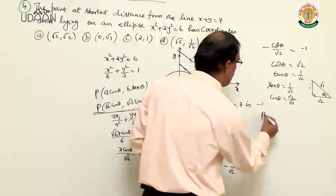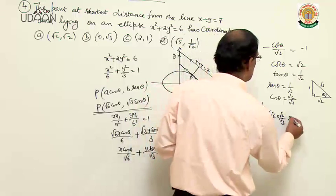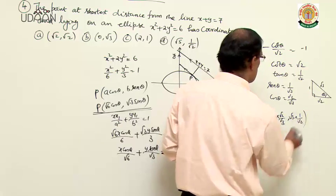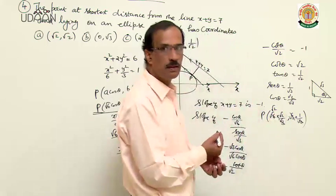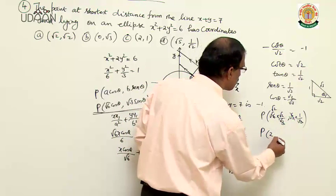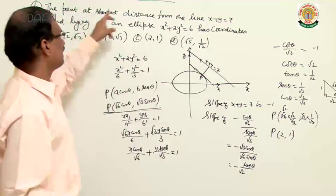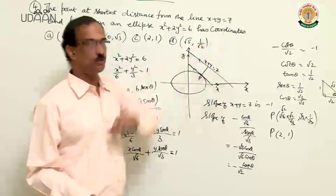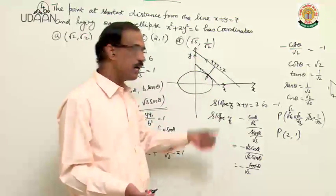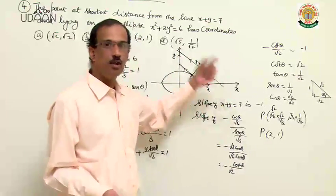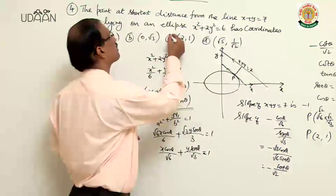Substituting into P = (√6 cosθ, √3 sinθ): P = (√6 · √2/√3, √3 · 1/√3) = (√12/√3, 1) = (2, 1). The point at shortest distance from x + y = 7 on the ellipse is (2, 1), so option C is correct.